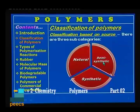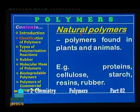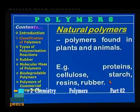How can we classify these polymers? There are different criteria for classifying polymers. First is based on their source. We can classify polymers into three important categories: natural, synthetic, and semi-synthetic. What are natural polymers? As the name indicates, these are polymers found in nature, that is in plants and animals. Examples are proteins, cellulose, starch, resins, and rubber.